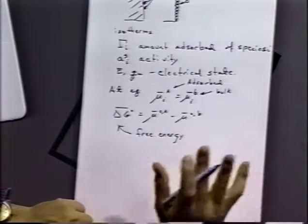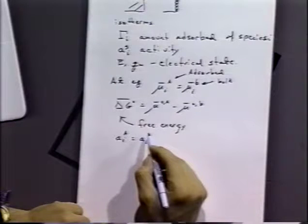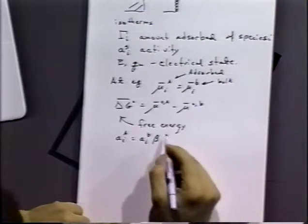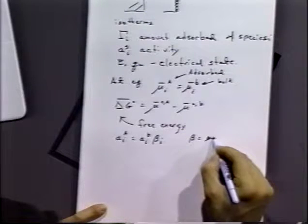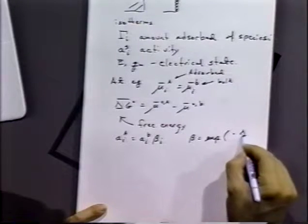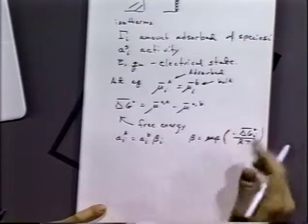Just like before, electrochemical free energies are dependent on electrode potential, so this is no different. We can vary the electrochemical free energy of adsorption by varying the electrode potential. The activity of ions or molecules in the adsorbed state is equal to the activity in the bulk times a term we'll call beta, where beta is a potential term — essentially an exponential function of free energy and therefore of potential, if you remember the relationship between free energy and potential.